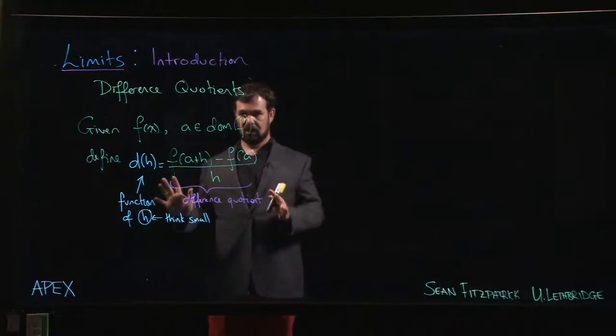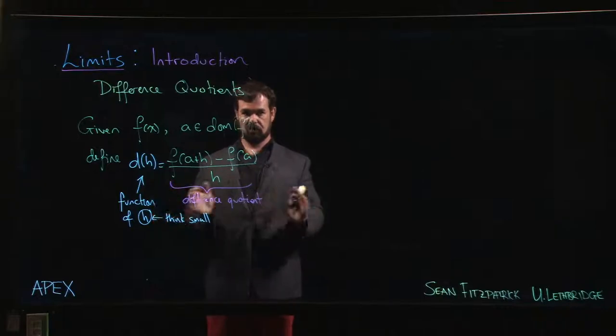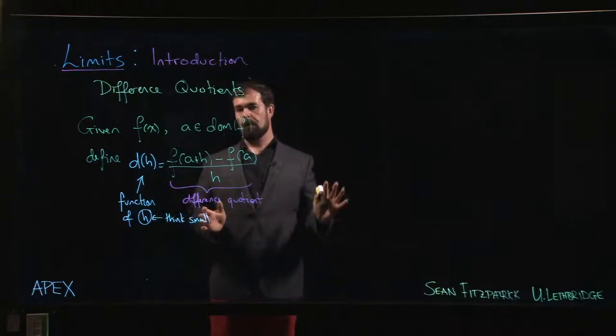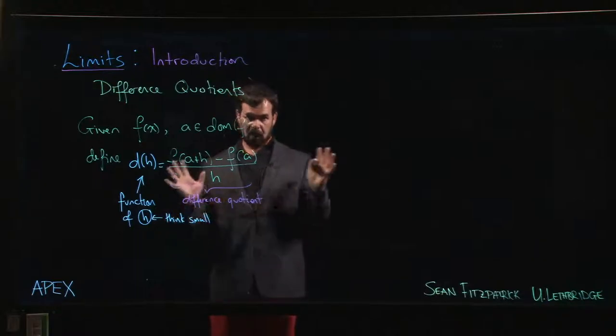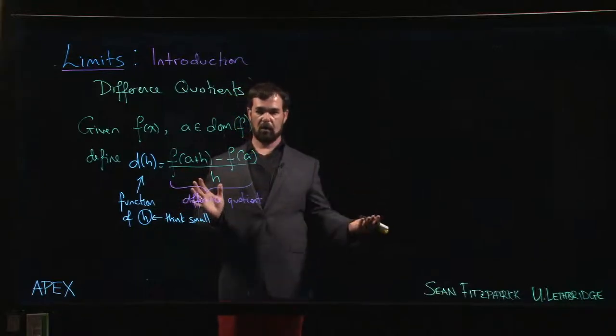But since we haven't introduced that idea yet, for now it's probably easiest to think in terms of average versus instantaneous speed. So let's look at a few examples to see how you set up these difference quotients, how they lead to limits, and how you might evaluate them.